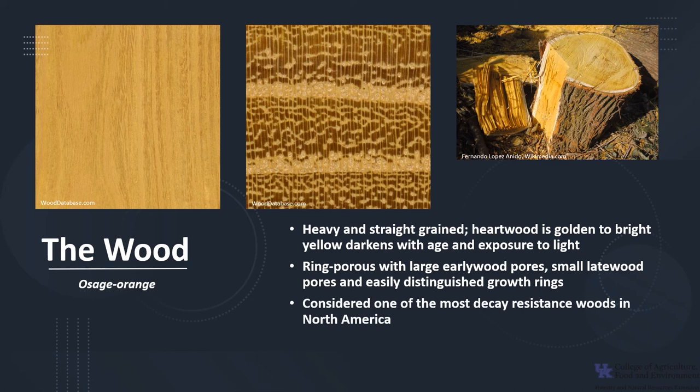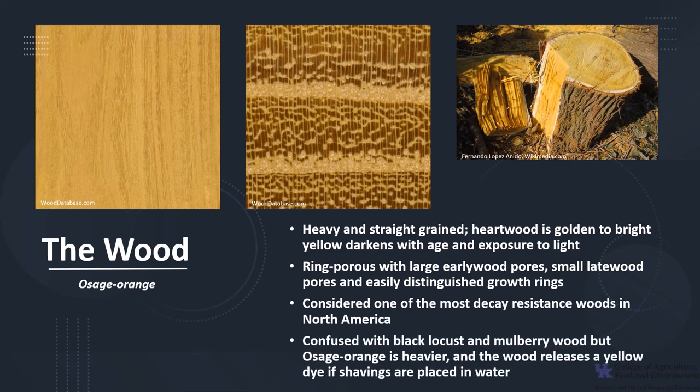The pores are filled with tyloses and growth rings are easy to distinguish. The wood is extremely durable and is considered one of the most decay-resistant woods in North America. Osage Orange can be confused with black locust and mulberry wood, but key differences are that Osage Orange is heavier and the wood releases a water-soluble dye which turns yellow if shavings are placed in water.